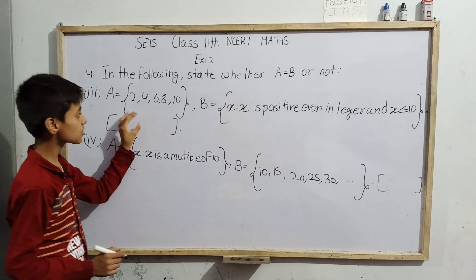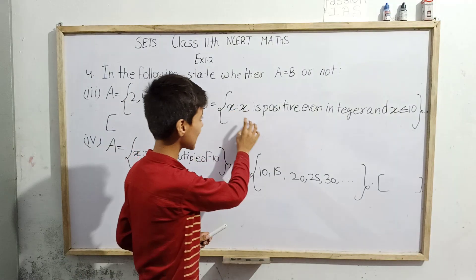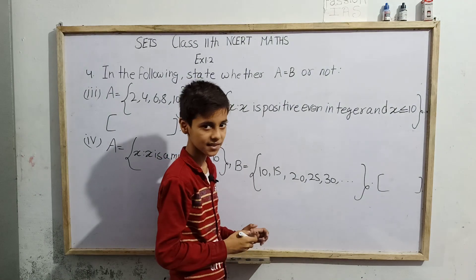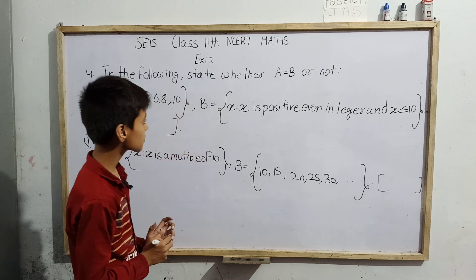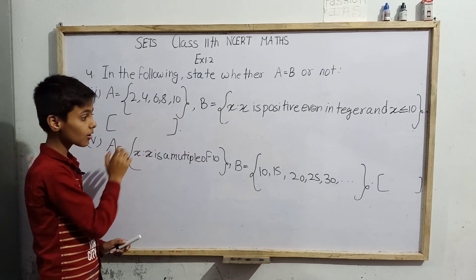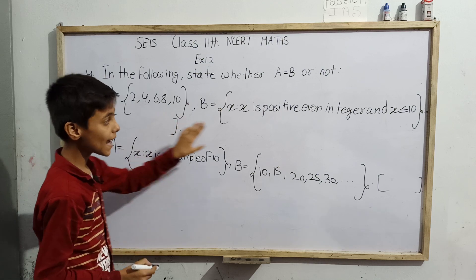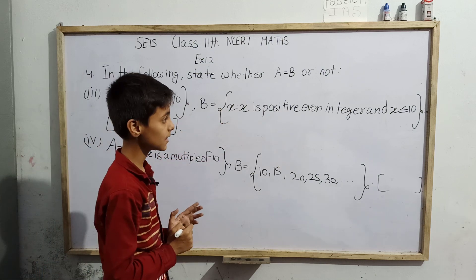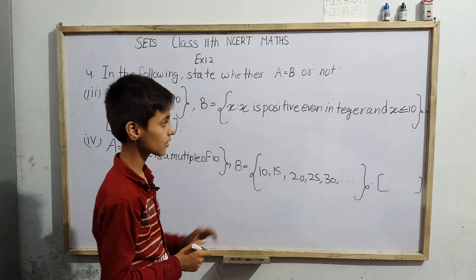Here in the third question we can see that A={2,4,6,8,10} and B={x: x is positive even integer and x≤10}. We can see set A is in roster form while set B is in set builder form. First we'll write set B in roster form, then we can compare whether they are equal or not.